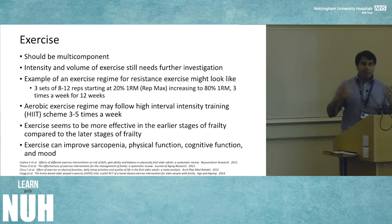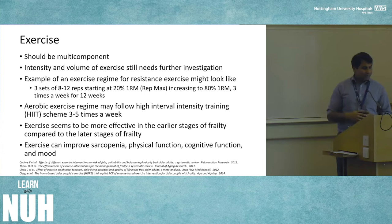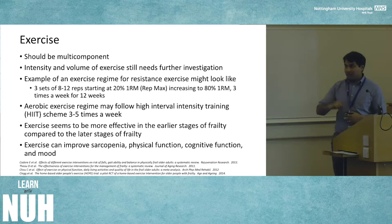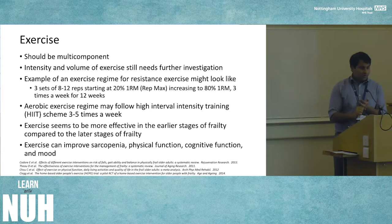Exercise should be multi-component. An example regime might be three sets of eight to twelve repetitions, starting at twenty percent one-rep max, increasing to eighty percent, three times a week for twelve weeks. People are also looking at high-intensity interval training — translational work from what we know about younger athletes. Exercise primarily targets sarcopenia but not only sarcopenia; it tends to be more beneficial in earlier stages of frailty. Exercise also improves not only physical function but cognitive function and mood, and we know from dementia studies how important exercise is.